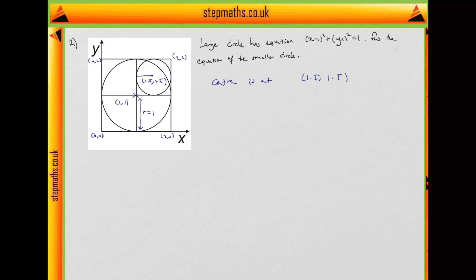The radius is clearly 0.5. We put that into normal form and write it as (x - 3/2)² + (y - 3/2)² equals the radius squared. The radius is 0.5, or one half, and a half squared is one quarter. So that's the equation of our smaller circle.